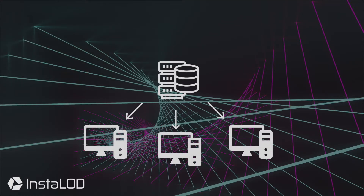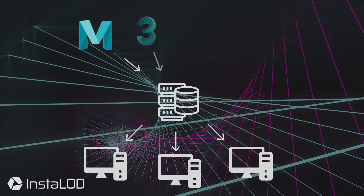In this video, we will look at how to process data through in-slot grid using the in-slot integration plugins. Please be aware that a master server and processing slave need to be set up to successfully process data through in-slot grid. Processing data through in-slot grid is possible with a variety of our software integrations including our plugins for Maya, 3ds Max, Blender and VRED.